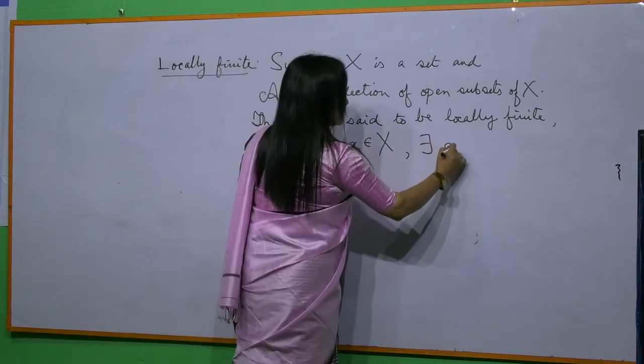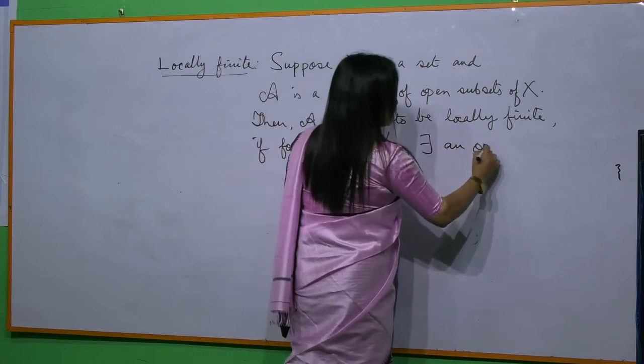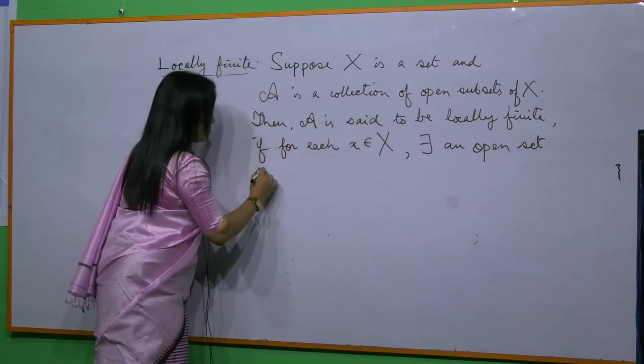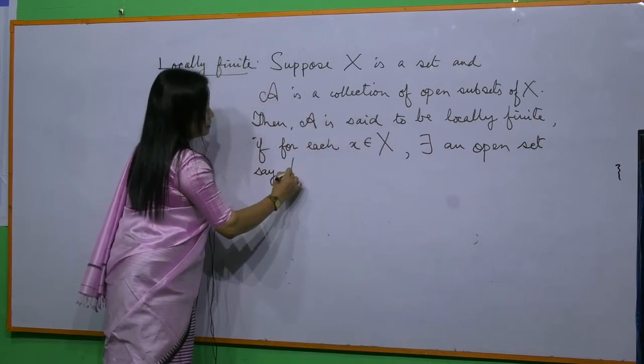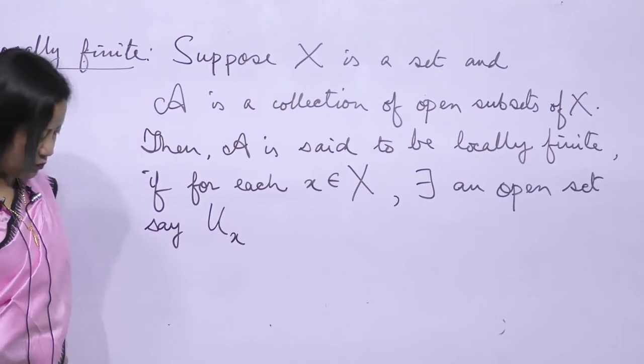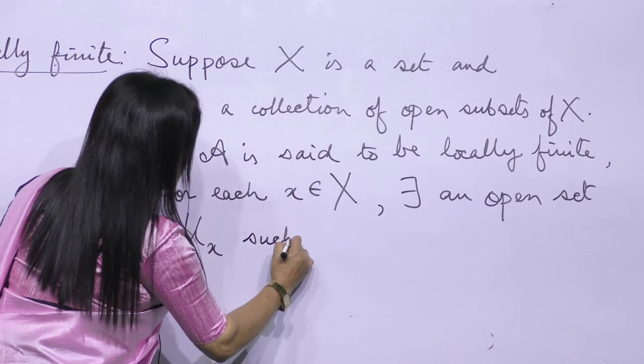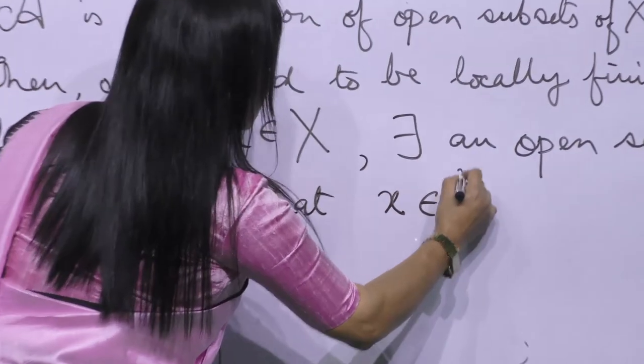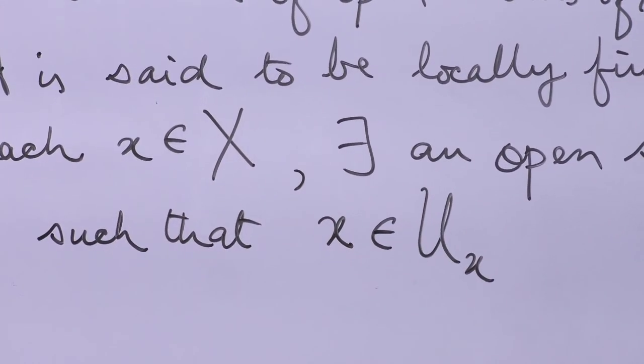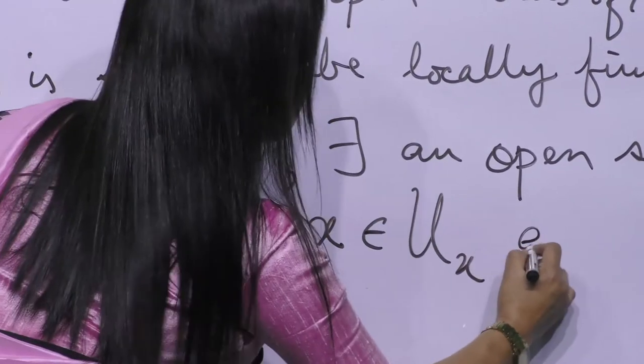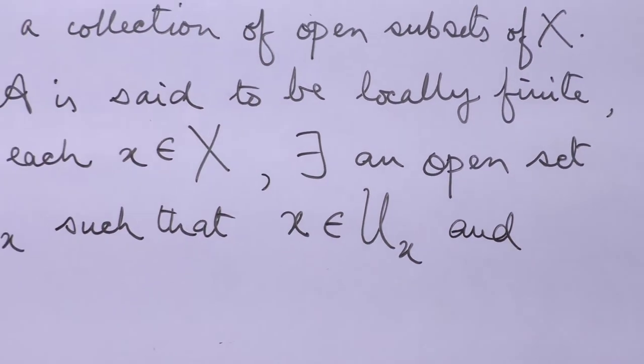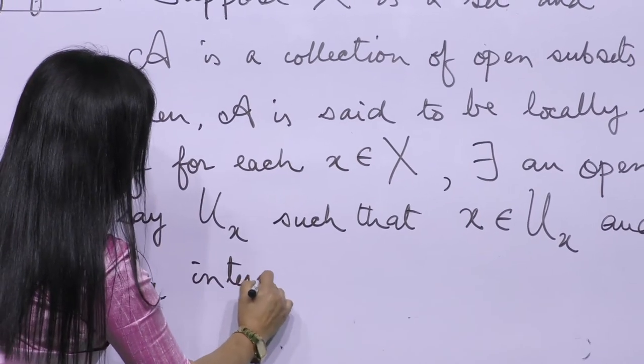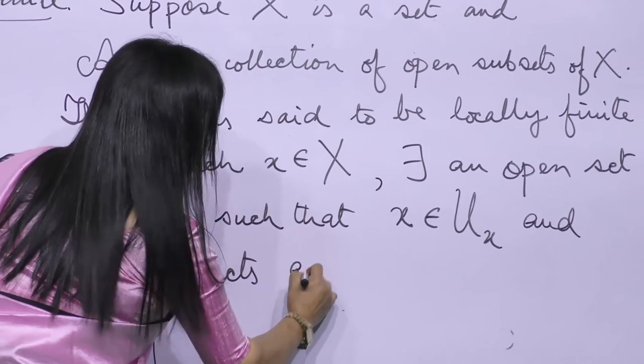there exists an open set U_x such that the element x belongs to this open set U_x and this open set U_x intersects at the most